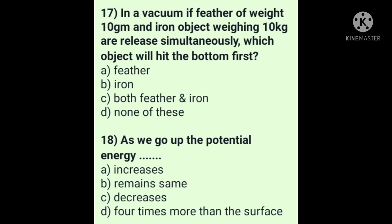Question 17: In a vacuum, if a feather weighing 10 grams and an iron object weighing 10 kg are released simultaneously, which object will hit the bottom first? Answer is option C: both feather and iron. In a vacuum there is no matter to oppose the motion, so if both objects are released at the same time, both will reach the bottom at the same time.